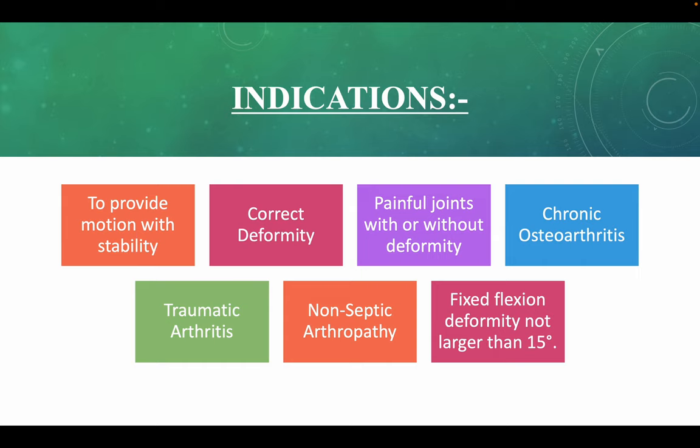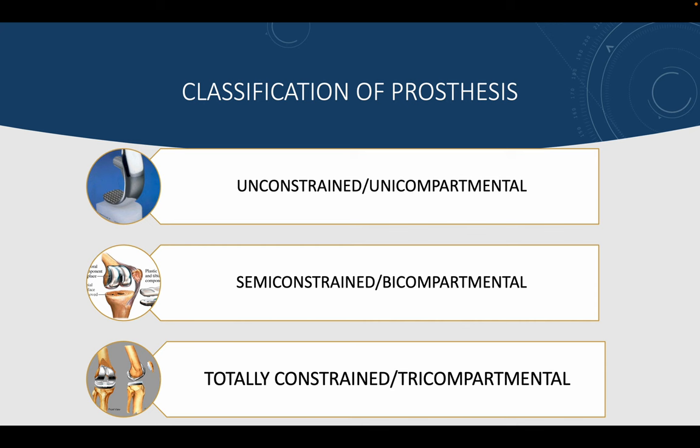There are three main classifications of prostheses: unconstrained or unicompartmental, semi-constrained or bicompartmental, and totally constrained or tricompartmental.